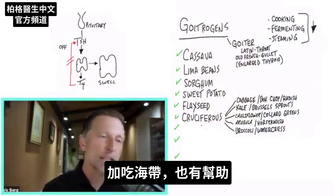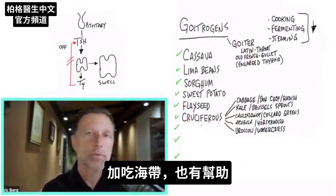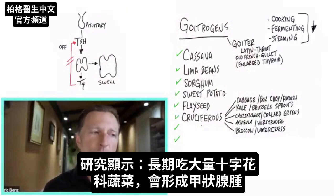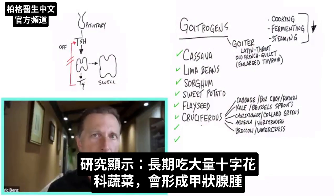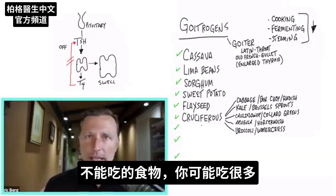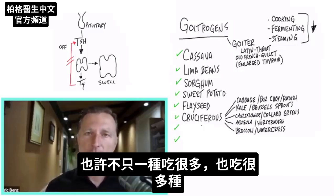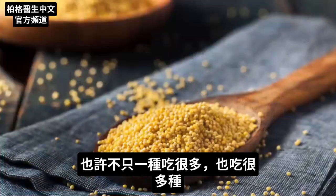Also, if you have a little sea kelp, that will help as well. If you look at the research, you would have to consume a good amount of these foods over a period of time to create a goiter. I'm bringing up all of these foods because you may be consuming a lot of them — maybe not individually in large amounts, but across the board.